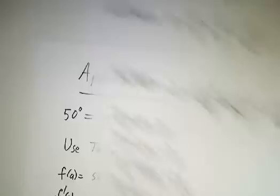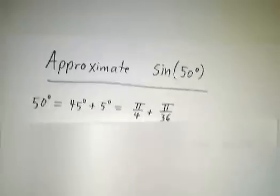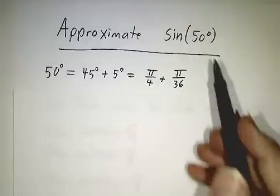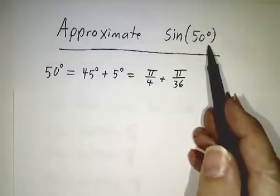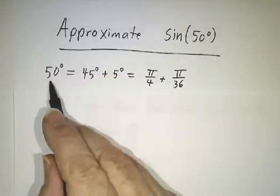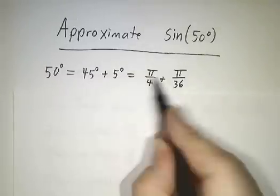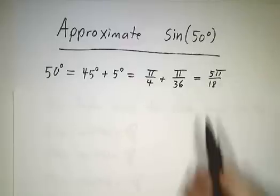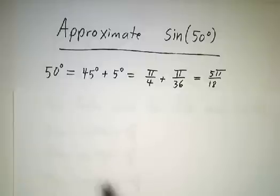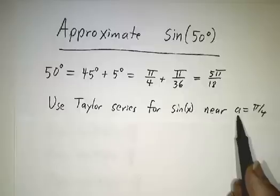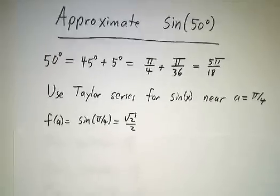Last example is the same idea, except now we're not doing it around x equals 0. Suppose we wanted to know the sine of 50 degrees. Now, whenever you're doing a Taylor series, you want to compare it to a nearby point. You want x minus a to be small. So you want to pick a to be close to x, and you want a to be a point that you understand well. Well, 50 degrees is close to 45 degrees. Or in radians, the 50 degrees is 5 pi over 18. And that's close to pi over 4, which is 4.5 pi over 18. So we're going to use a Taylor series for sine of x. And we're not going to do it around x equals 0. We're going to do it around x equals pi over 4.